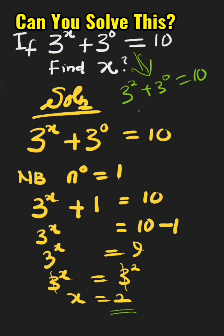3 times 3 gives you 9. Plus, in the law of indices, any number raised to the power of 0 is 1, equals 10. 9 plus 1 is 10, 10 equals 10, so our answer is correct. If this helped, please subscribe, like, and share. Thank you.